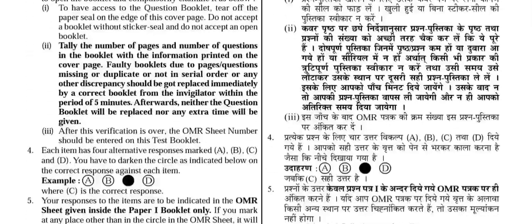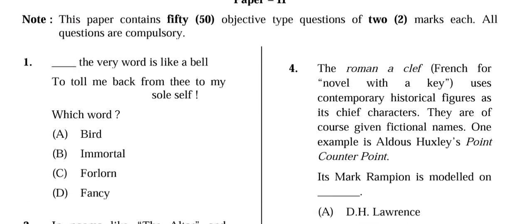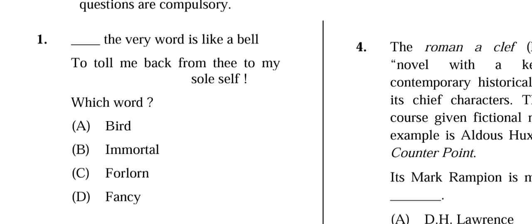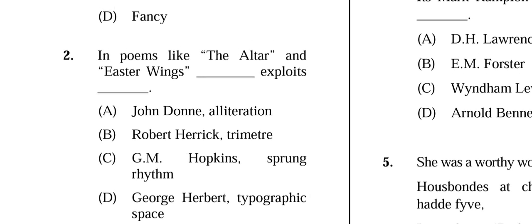The first question is: 'The very word is like a bell to toll me back from thee to my sole self' — which word? The options are: (A) bird, (B) immortal, (C) forlorn, (D) fancy. The correct answer is (D) fancy: 'The very word is like a bell to toll me back from thee to my sole self' — forlorn.